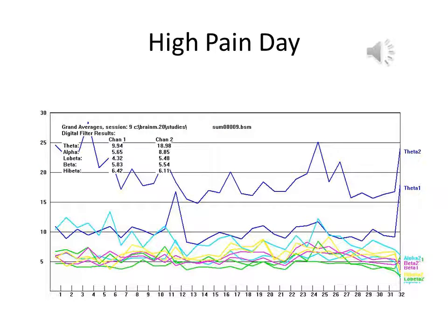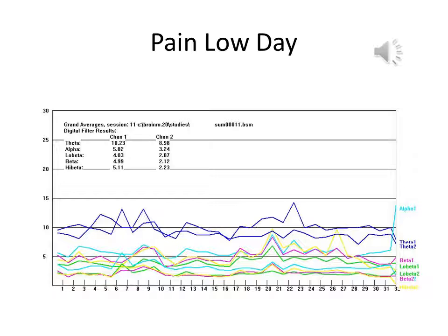Here is a trend screen showing the client on a high pain level day. Note the elevated right hemisphere theta indicated by the blue line at the top of the screen. You can see that the theta is being trained down effectively over the course of the session. On low pain level days, the same client's theta is dramatically diminished and equal to the theta in the left hemisphere.